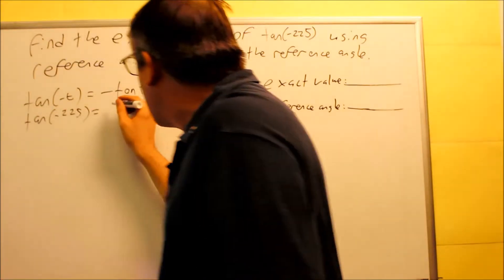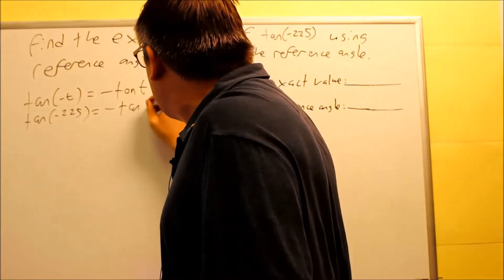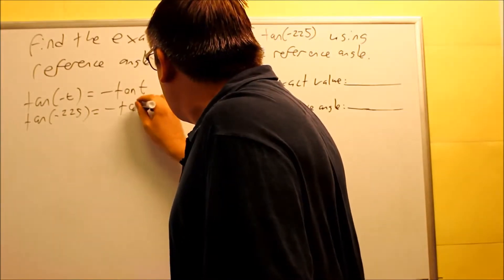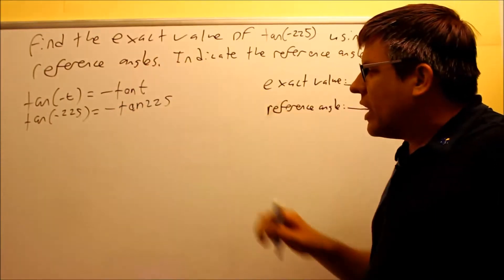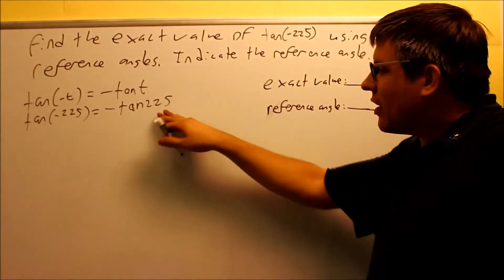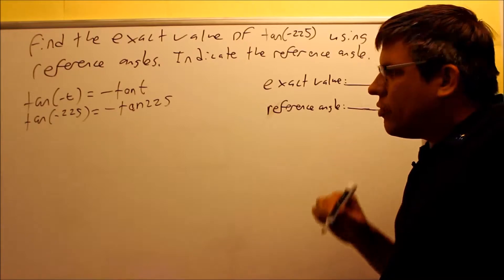For this, I'm going to do tan(-225) equals negative tan(225). That means I'm changing the problem now, rewriting it as a positive angle that has 225.